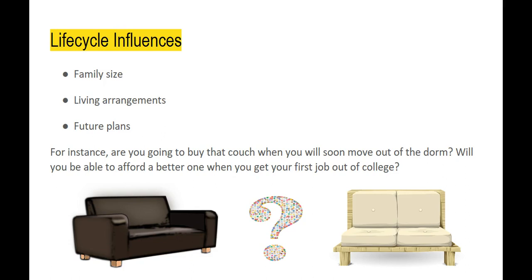Life cycle influences overlap with demographic influences to trigger buys, but the difference is that a demographic influence is a lot more stable than a life cycle trigger. For instance, family size — if you have a family of six, you're going to need a larger home, and that's a fairly stable demographic factor. On the other hand, living arrangements can change all the time. You have a roommate join, you have a roommate leave. These are called life cycle influences that are much more short-term and can influence the immediate need to buy an extra sofa or chair.